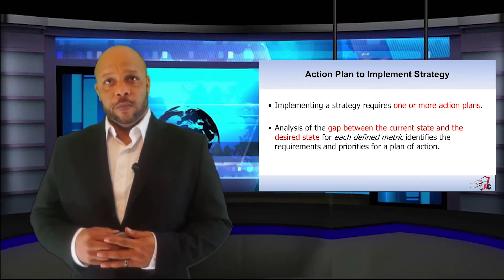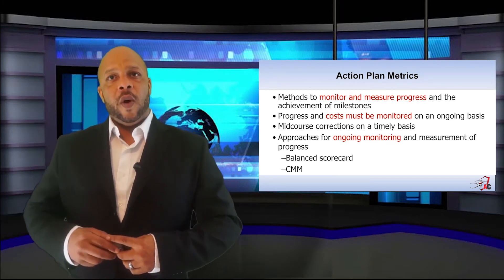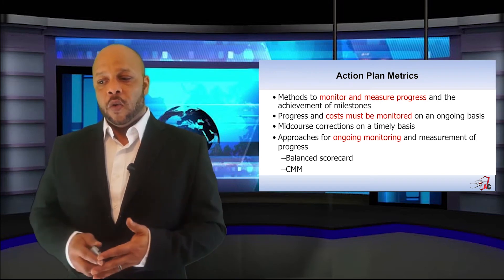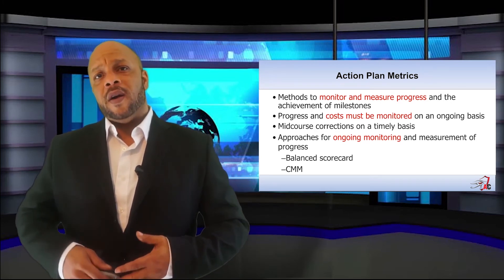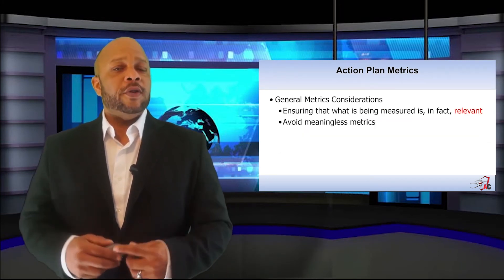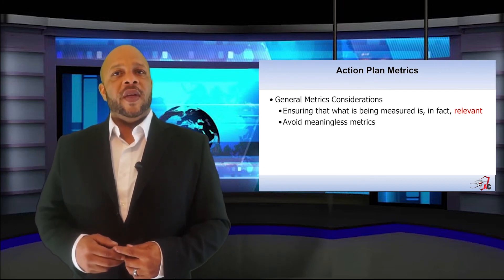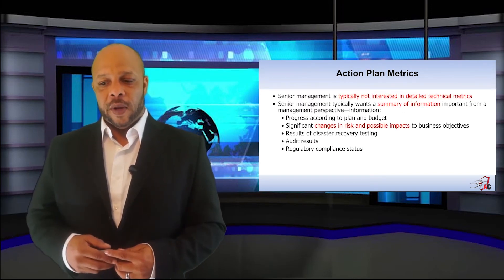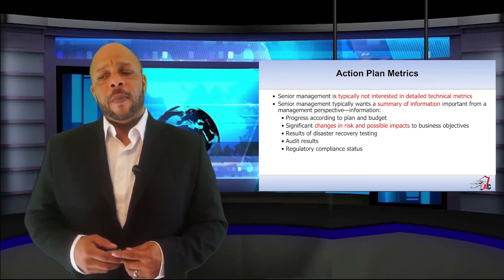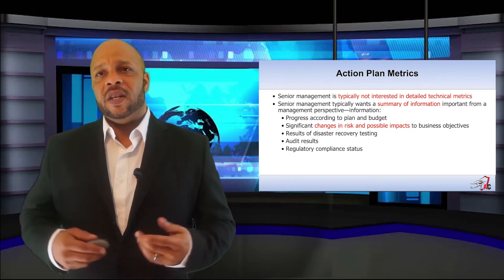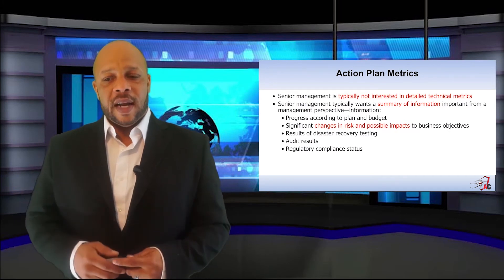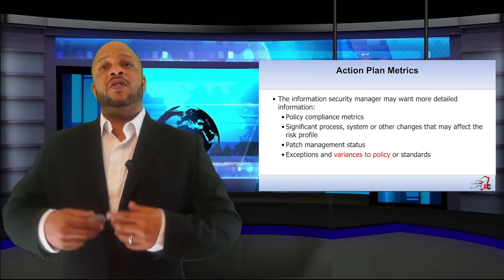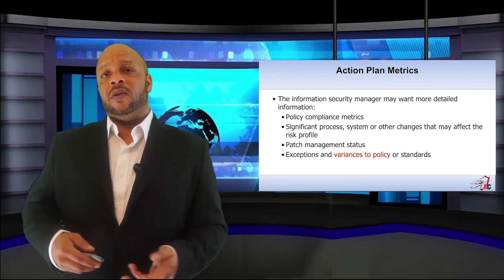Some of the metrics to consider when creating action plans: How are you going to monitor and measure progress? How are costs going to be monitored and who controls the purse strings? How will you do ongoing monitoring to make sure everyone is on the same page? This is often where CMM or a balanced scorecard comes into play. Whatever metrics you decide on, you must make sure they are relevant to the action. As the security manager collects action plans and correlates them for senior management, keep in mind their attention span — senior management wants to get to the bottom line: what's my risk and how much will it cost? The security manager, meanwhile, is often interested in total policy compliance metrics and variances to standards that have been put in place.